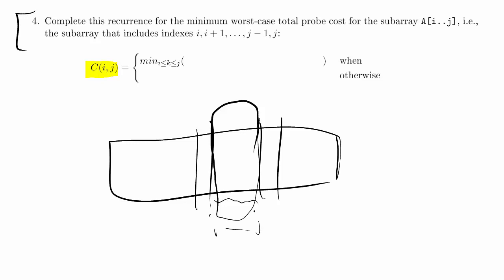That is by far the most important part of the problem to figure out — and it was given to us. There's also something else given to us which is really useful: we're going to need another variable k, and we're going to let k range all the way from i up to j. The minimum over i ≤ k ≤ j means: for all k ranging from i up to j, find the minimum value of whatever quantity is inside. We don't know what that quantity is yet — we'll have to figure it out.